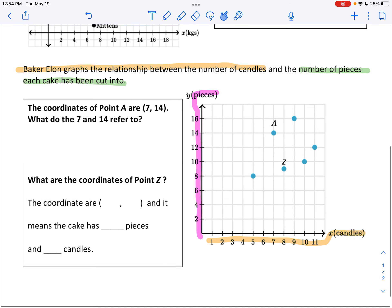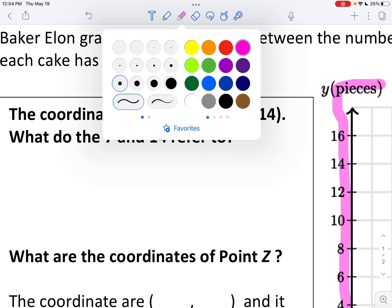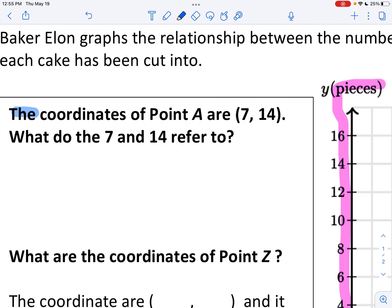All right, so now I'm going to look at the rest of it. It says the coordinates of point A. Let me highlight this. The coordinates of point A are (7, 14).